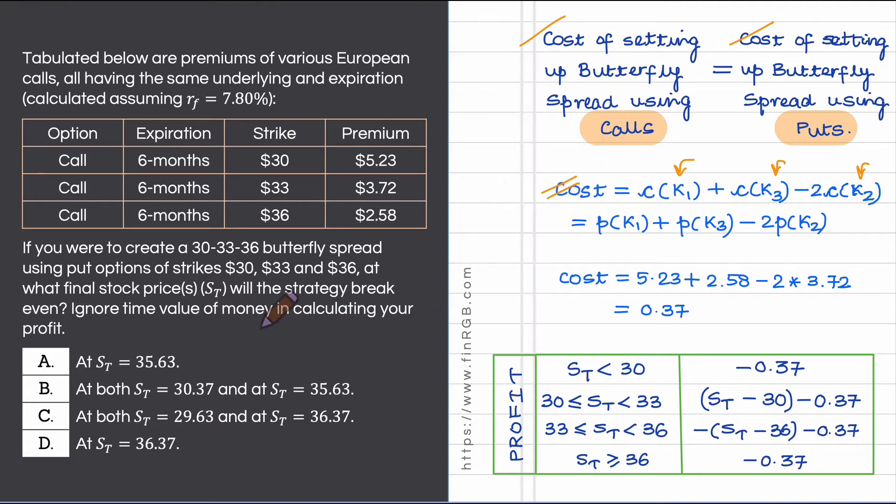The cost involved to set up this butterfly spread is simply the cost involved in buying the low strike call plus the cost involved in buying the high strike call, and we are subsidizing the total cost involved in buying these two options by selling two call options with the intermediate strike. Quickly plug in these premiums from this table and confirm that the cost involved comes out to 0.37 or 37 cents.